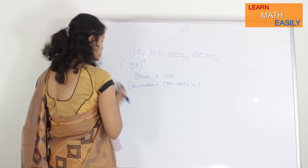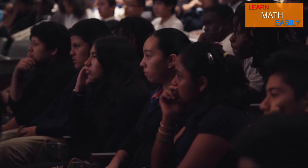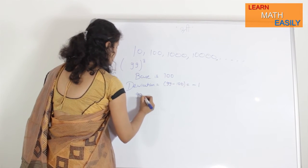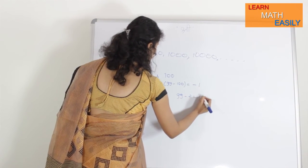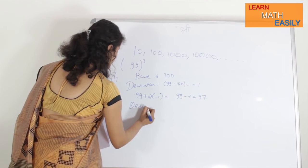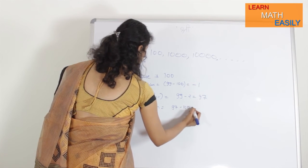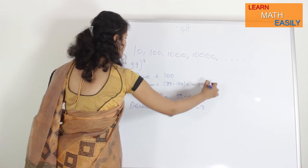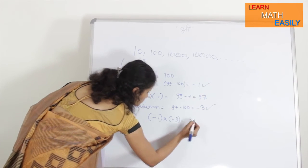Now, what you have to do, this is your first part. In second part, what you have to do, you have to add number, that is 99 plus 2 times its deviation. That is, 99 minus 2 is equal to 97. In third part, you will calculate deviation, that is 97 minus 100, you will get a new deviation, that is minus 3. Now, what you are going to do is, you will multiply minus 1 and minus 3. Minus 1 into minus 3, this will be a positive 3 here.